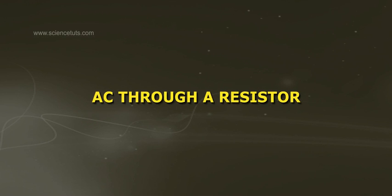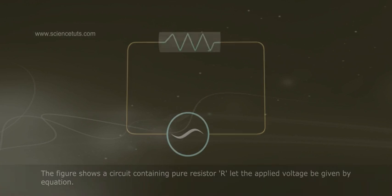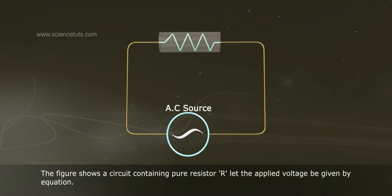AC through a resistor. The figure shows a circuit containing pure resistor R.